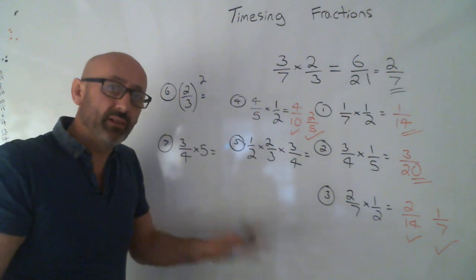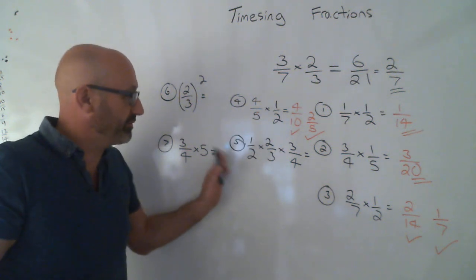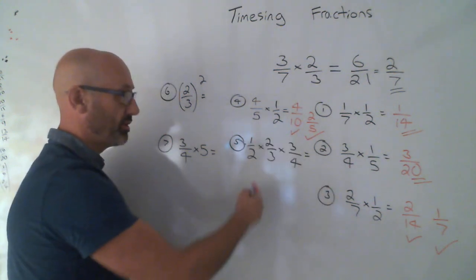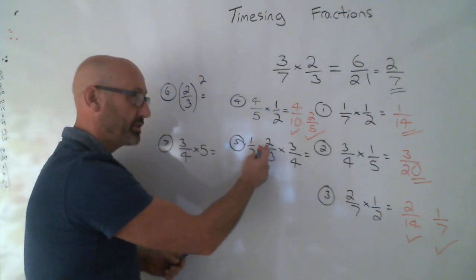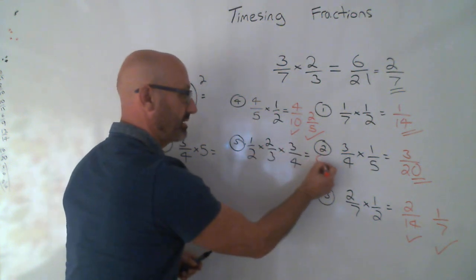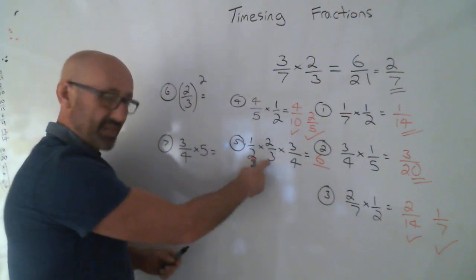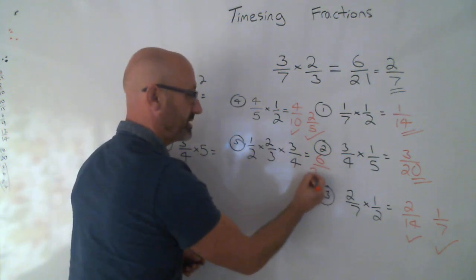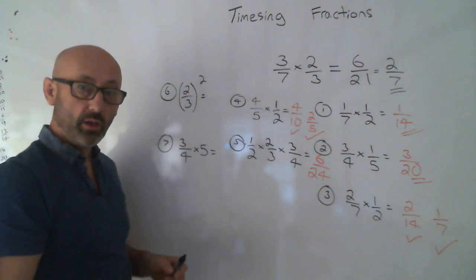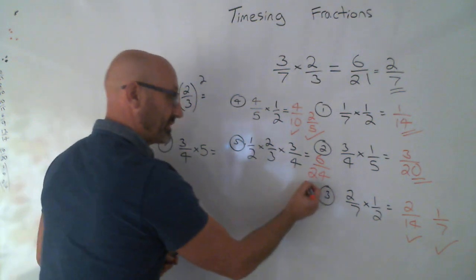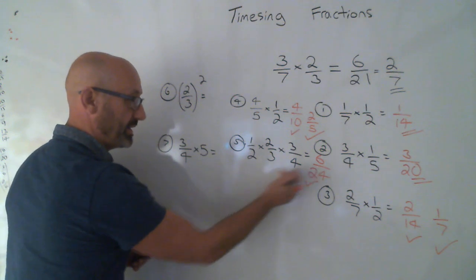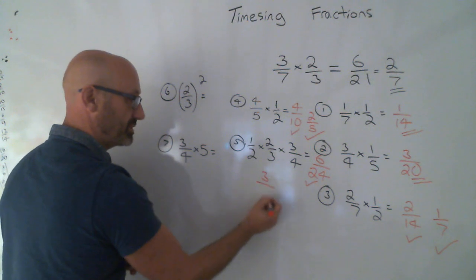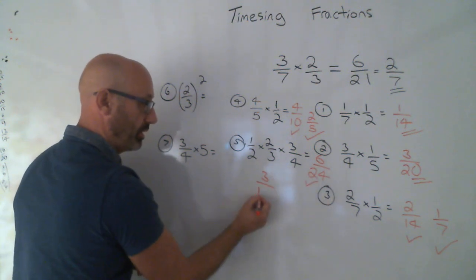Here, don't panic. There's three of them in the line. Just follow exactly the same rule. So times all the tops. 1 times 2 is 2, 2 times 3 is 6. 2 times 3 is 6, 6 times 4 is 24. And of course, that's right. Give it a tick. But that will simplify.